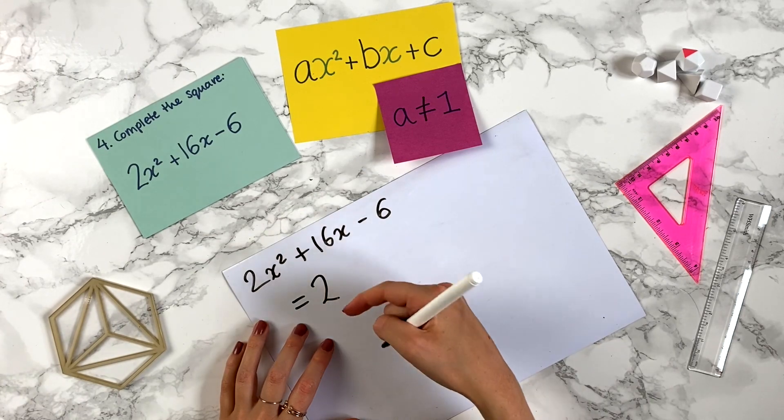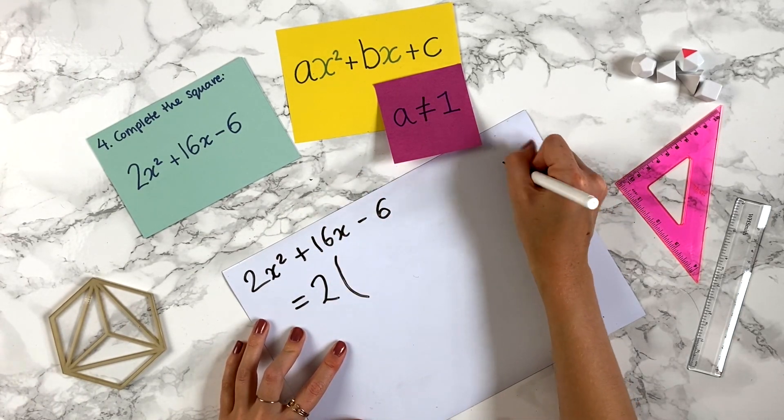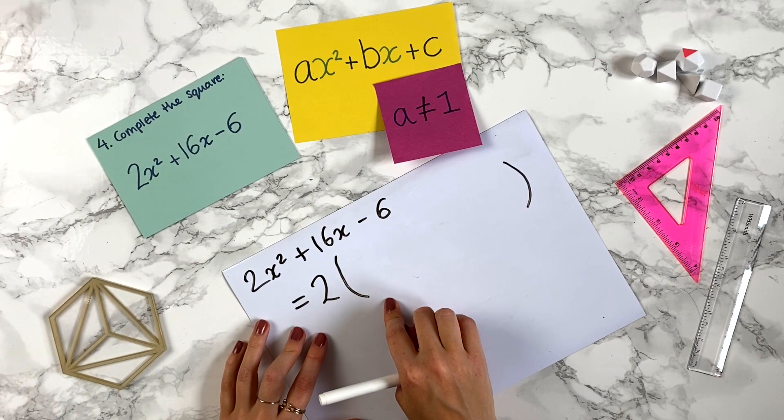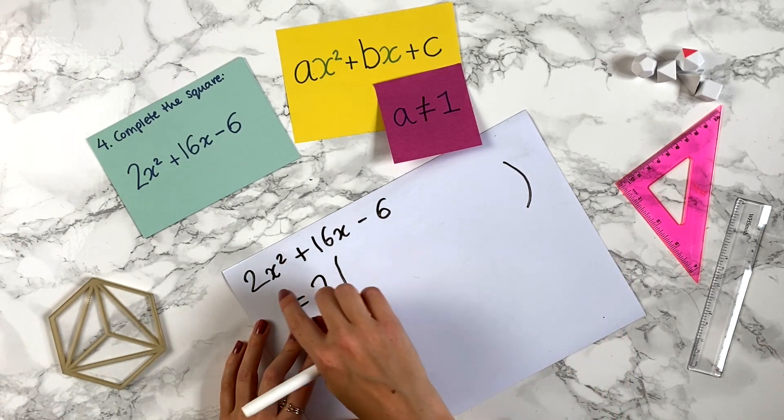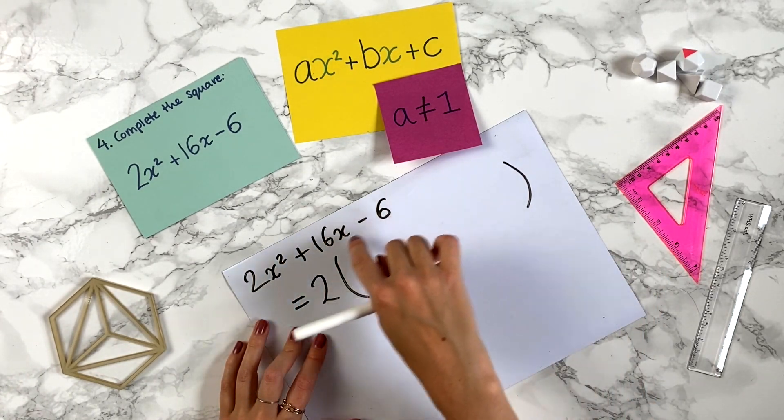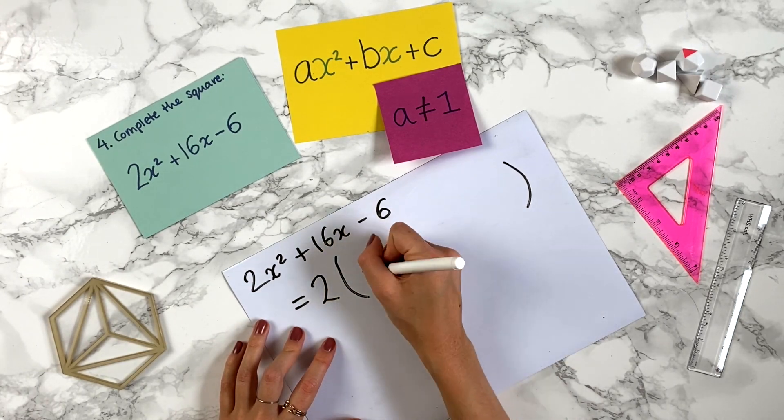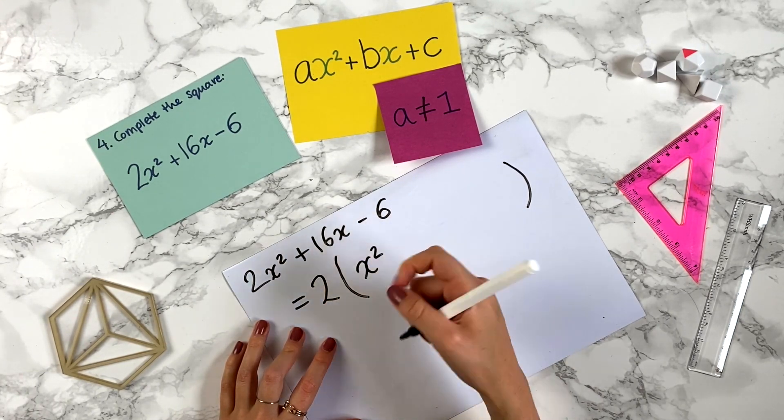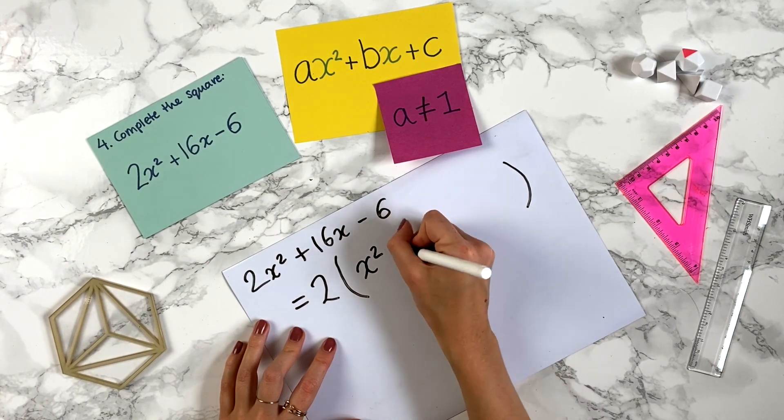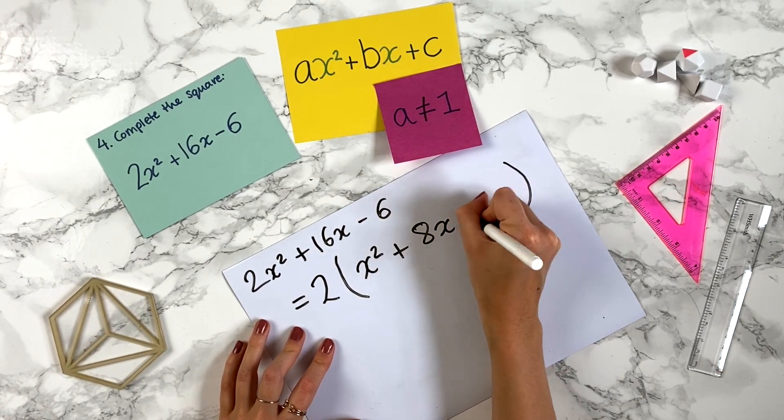So we can say 2 and then put things in brackets. So we've got 2 times. Now we've got to think what will make this equal to this first line. So if we put in here x squared and divide everything here by 2, so plus 8x minus 3.